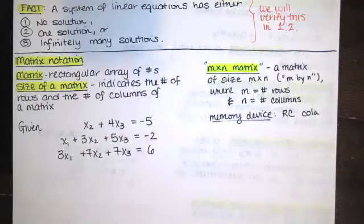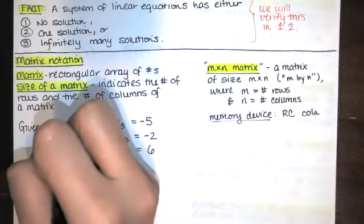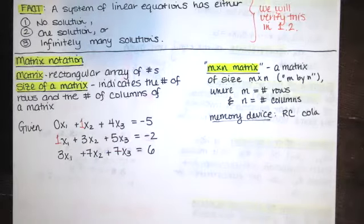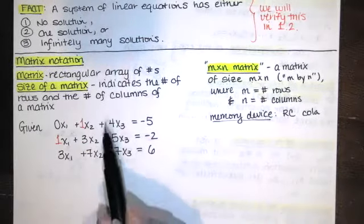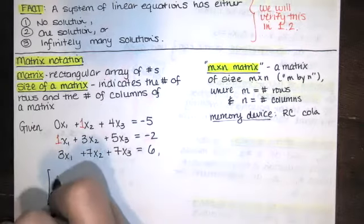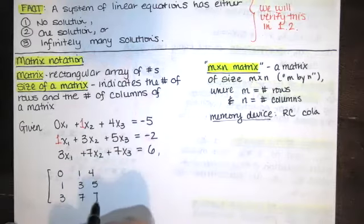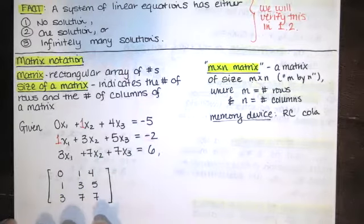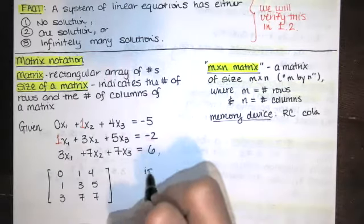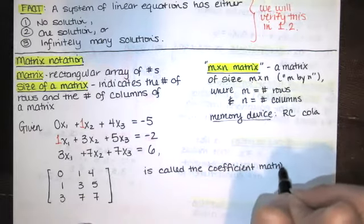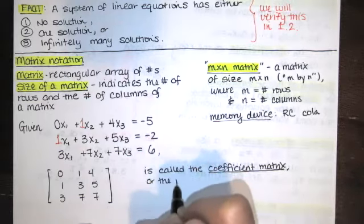If I have a system of equations, I might be interested in just the coefficients. Note that if there's no X₁ term, it's implied that coefficient is 0; a lone X₂ has an implied coefficient of 1. Looking at just the coefficients of X₁, X₂, and X₃ on the left-hand side, we get the values 0, 1, 4 for the first equation; 1, 3, 5 for the second; and 3, 7, 7 for the third. That rectangular array is called the coefficient matrix.